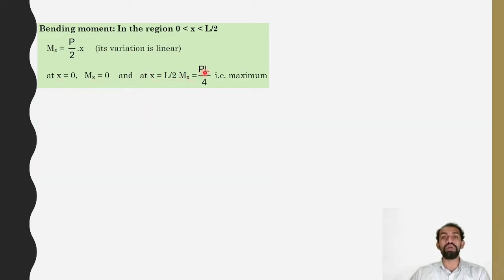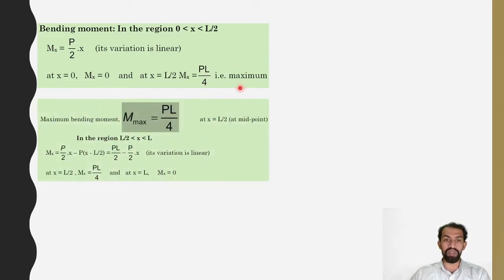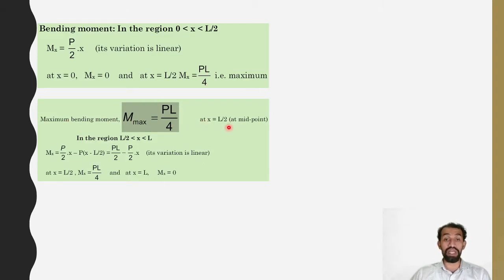At x equals 0, Mx equals 0, and at x equals L by 2, Mx equals P·L by 4. So substituting x equals L by 2 into the equation gives P by 2 into L by 2, which is P·L by 4 — the maximum bending moment. The maximum bending moment is P·L by 4 at x equals L by 2, that is, at mid span.